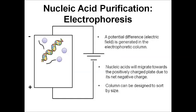The third method of nucleic acid purification relies on electrophoresis. A potential difference is applied across the sample. Because DNA has a net negative charge, it is attracted to the positively charged end, and you simply collect what accumulates there at the positive end of the electrophoretic cell.